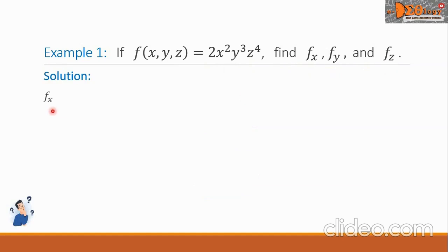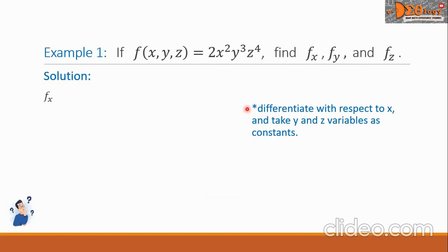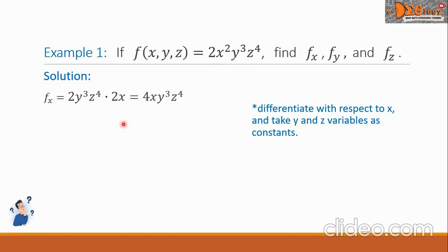Let's begin with f sub x, the partial derivative of f with respect to x. We differentiate with respect to x, taking y and z as constants. The constants are 2y cubed z raised to 4, multiplied by the derivative of x squared, which is 2x. Simplifying, f sub x equals 4x y cubed z raised to the 4th power.